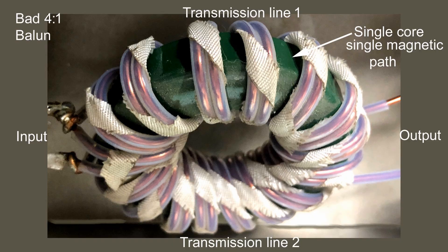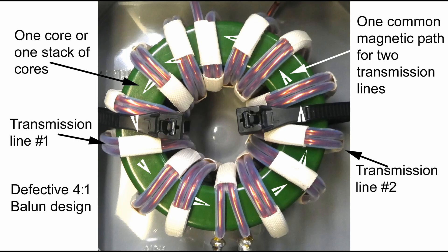The quickest way to tell if you have one of these baluns and you don't have the test equipment or the time to test it, is just pop the cover off and look at the balun and see if the balun has two transmission lines sharing one common magnetic path.